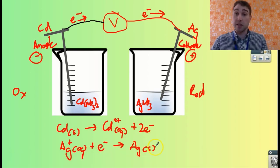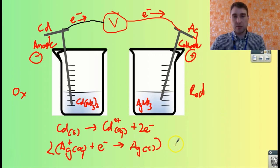We can write the overall equation by multiplying the silver half-reaction by two so we have the same number of electrons on both sides, then we'll be canceling out the electrons. So we've got 2Ag⁺ aqueous - two silver ions in solution - plus two electrons, goes to 2Ag solid.